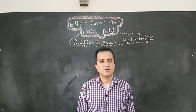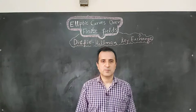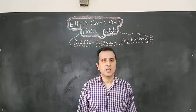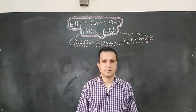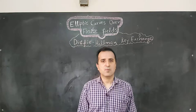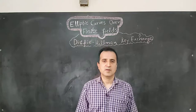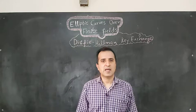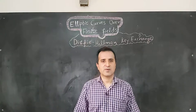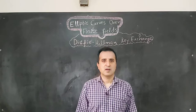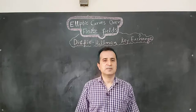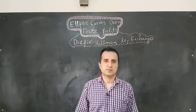In this video, I will explain the Diffie-Hellman key exchange algorithm on elliptic curve. The aim of the Diffie-Hellman key exchange algorithm is that Alice and Bob may create a common private key without meeting each other and by sharing public information.